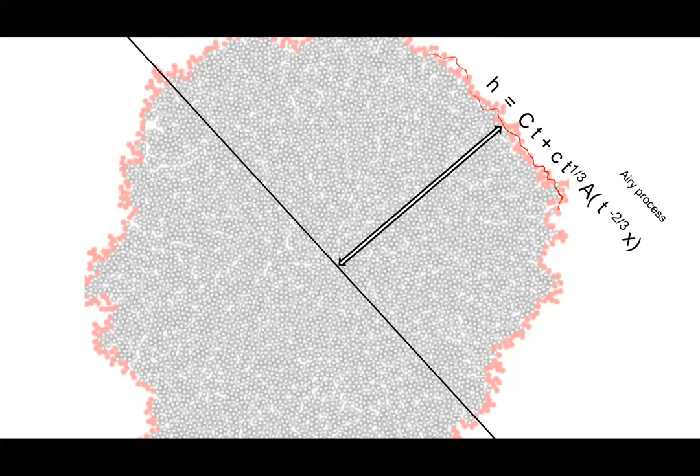The boundary is not exactly at CT; it's at CT plus some T to the one-third. On top of that there's a process which governs the fluctuation of this boundary, which I'm calling A. It lives on a lateral scale of T to the two-thirds. This A is some universal stochastic process called the Airy process, and we know it because we know the finite dimensional distributions of it.